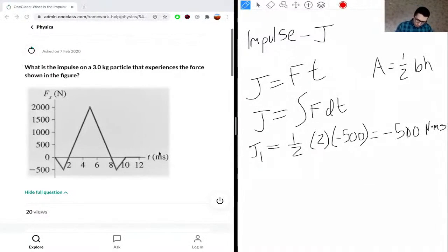The next one, J2, is one-half times the base, which is 8 minus 2, or 6, times the height of 2000. This gives us 6000 Newton-milliseconds.